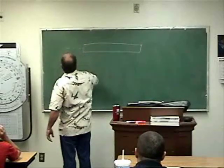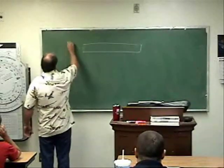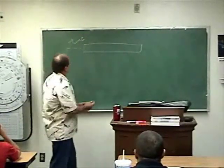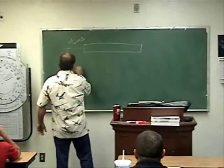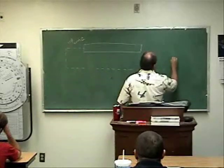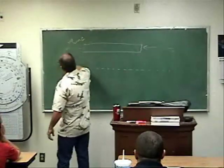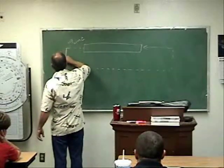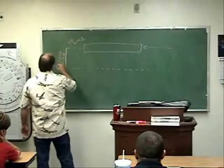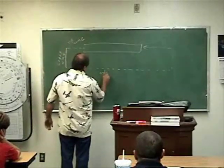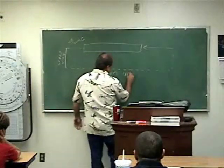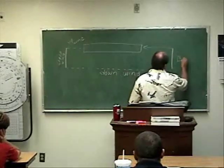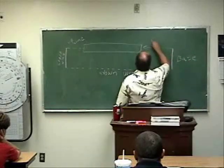So this first section until you make your first turn is called the upwind. So the first one is the upwind leg, then crosswind. This section right here is crosswind. Downwind. Base leg. Final.